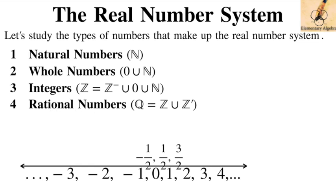So these are our rational numbers. The entire collection of signed numbers including fractions and zero is called the system of rational numbers. Rational numbers also have decimal representations. The definition of a rational number is one which can be written in the form A over B, where A and B are integers and B, the denominator, must not be equal to zero. Every rational number has a decimal representation that is either terminating or repeating.